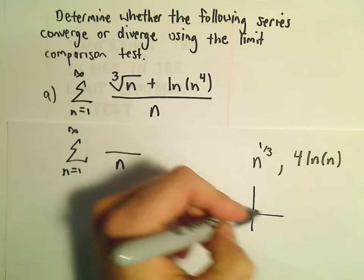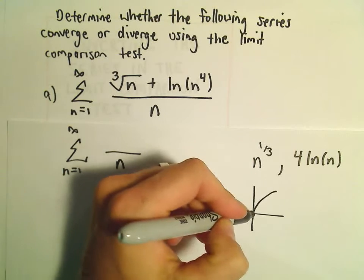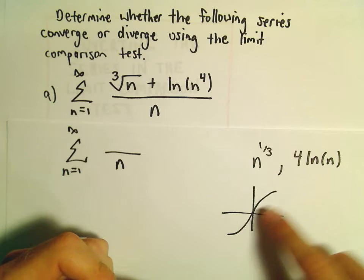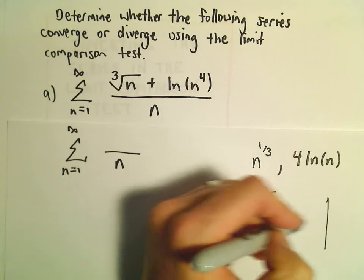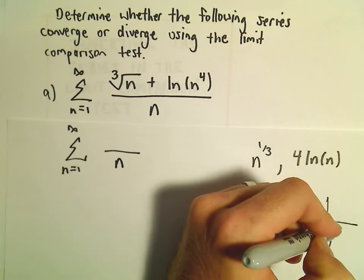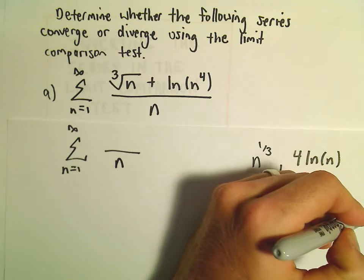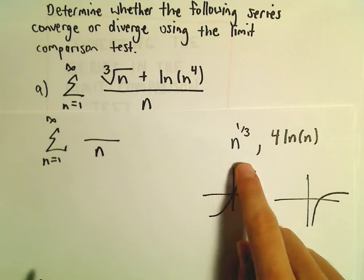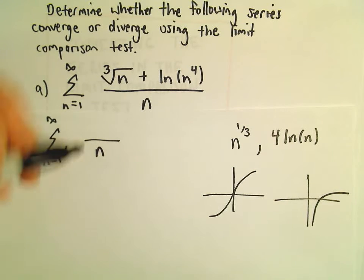And a cube root function kind of looks like a square root function. It goes off to infinity, but it curves, it doesn't get there super quickly. The natural logarithm of n also goes to infinity, but it goes to infinity much slower. So the function that's going to get bigger faster will certainly be the n to the 1/3.